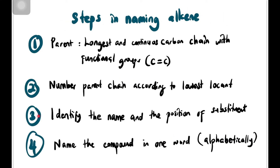To name alkene, sama juga ada 4 steps ya. First sekali, tentukan parent — parent is based on longest and continuous carbon chain with functional group, which is C double bond C. Lepas tu, kita number the parent chain according to the lowest locant. Number 3, kita identify the name and the position of substituent. Last sekali, baru kita write the name in one word, alphabetically.